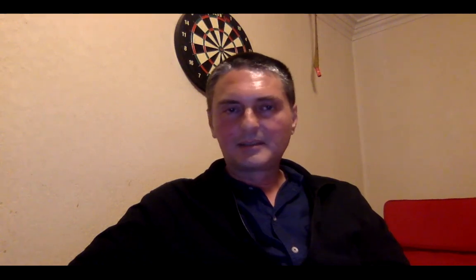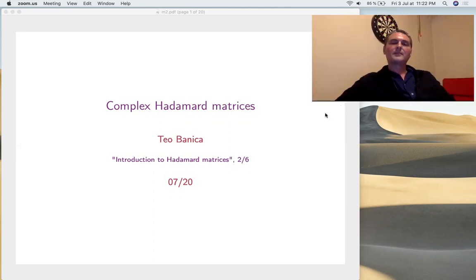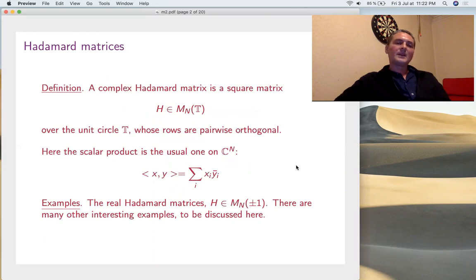So let's have this started on this presentation. The complex Hadamard matrices - basics and a lot of algebra, that's what we'll do today. A complex Hadamard matrix is exactly as a real one, it's a square matrix, but this time over the unit circle, which is denoted T because it's a torus, whose rows are pairwise orthogonal with respect to the usual scalar product, which is linear at left, anti-linear at right.